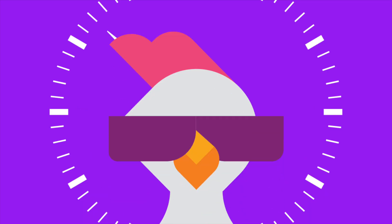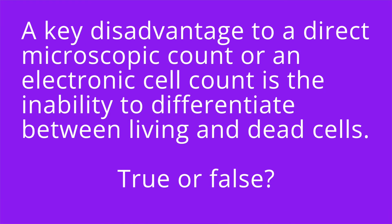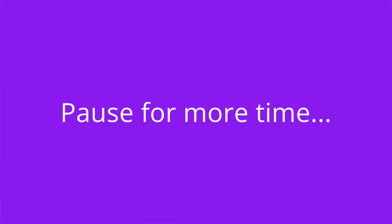It's quiz time and I have four questions for you. Question number one: a key disadvantage to a direct microscopic count or an electronic cell count is the inability to differentiate between living and dead cells. True or false? The answer is true.